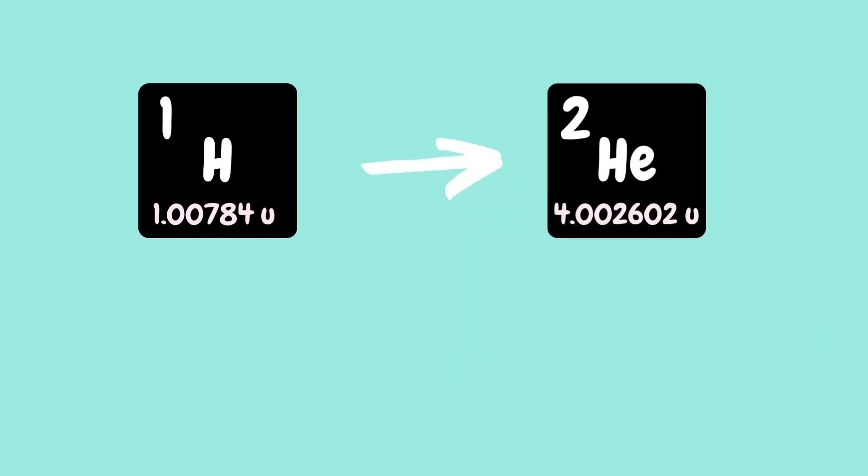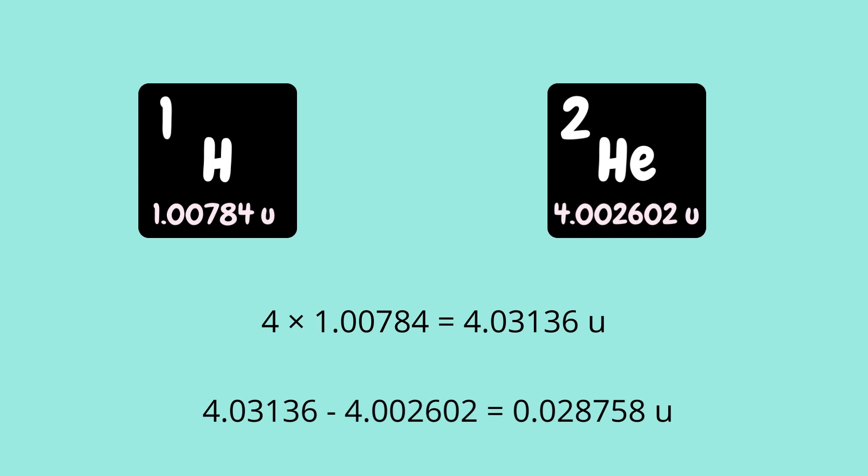We know that hydrogen weighs 1.00784 unified atomic mass. With immense pressure and temperature, you can provide it a suitable environment as well as the energy required to convert itself into helium. Helium weighs 4.002602u. When 4 hydrogen comes together to fuse into helium, the total mass of 4 hydrogen is 4.03136u as opposed to 4.002602u mass of helium. Difference thus becomes 0.028758u.